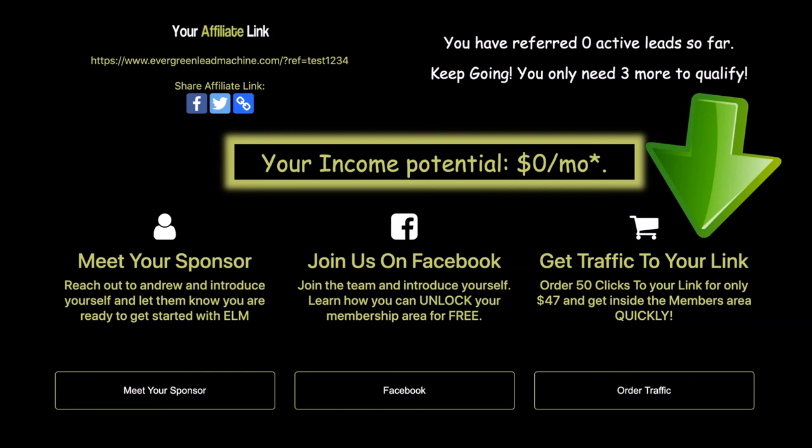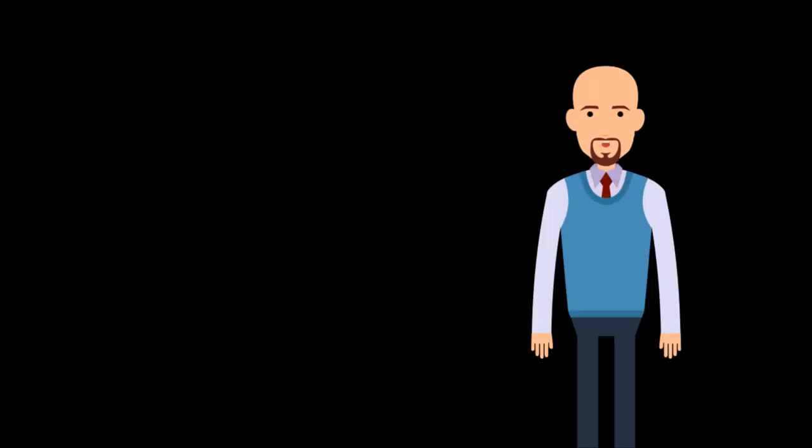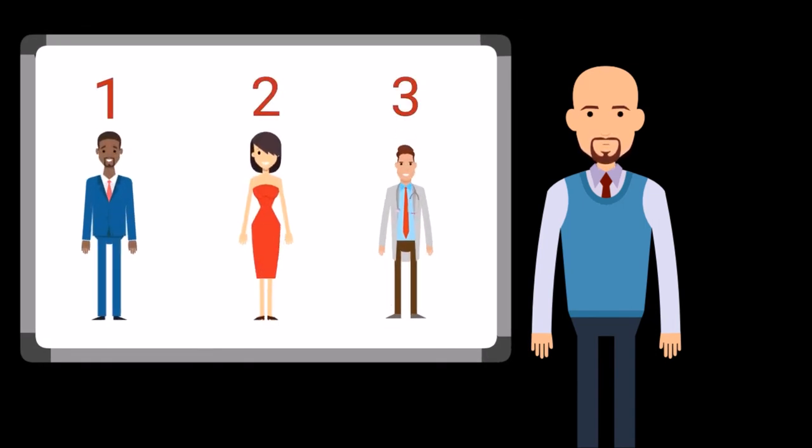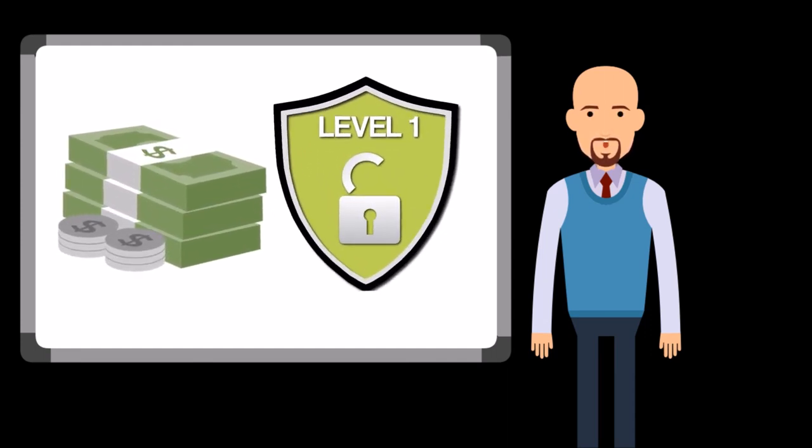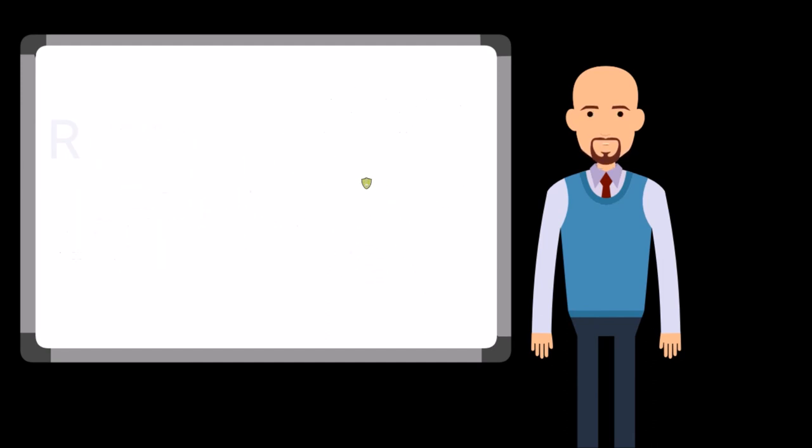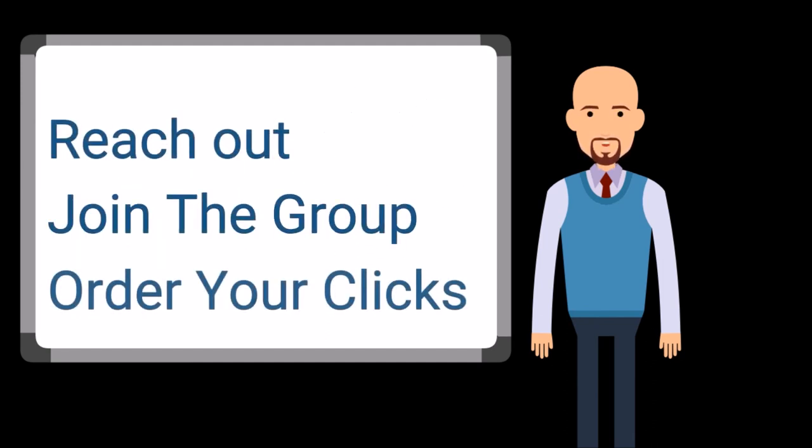Now that you're familiar with all of this, let's show you how you can unlock the Evergreen Lead Machine and use the system to its full potential. In order for you to unlock your membership area, you need to refer three free members to the Evergreen Lead Machine system. Once you've referred your three members, you'll be automatically redirected into the membership area where your first income stream and your first steps to success will be unlocked. That's all there is to it. All you need to do now is reach out to your sponsor, join the Facebook community, and if it's within your budget, order your clicks so you can get inside the membership area as soon as possible.